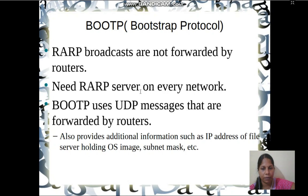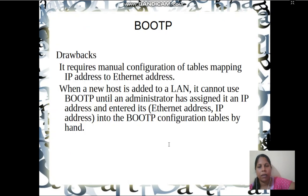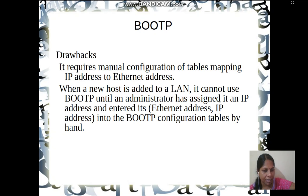BootP is one such protocol. It uses a UDP message, which is forwarded by routers. BootP also provides additional information such as the IP address of a file server holding the OS image, subnet mask, and so on. However, BootP has its own drawbacks: it requires manual configuration of tables mapping IP addresses and hardware addresses. When a new host is added to the LAN, BootP cannot be used until an administrator assigns it an IP address and enters it into the BootP configuration table. So BootP is not fully automatic — it requires manual intervention.